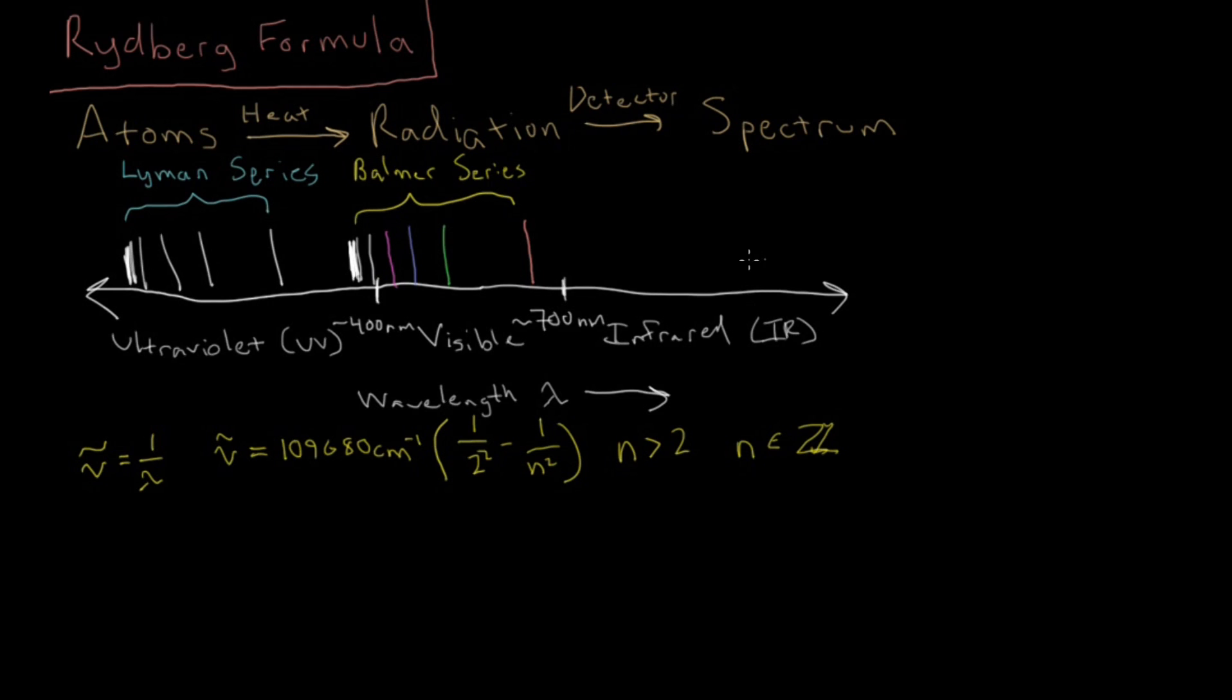And then, same thing within the IR region, it was noticed that there was a set of lines which converge, ultimately, right before the visible region. And this set of lines named, I believe it's pronounced the Paschen series, don't quote me on that.